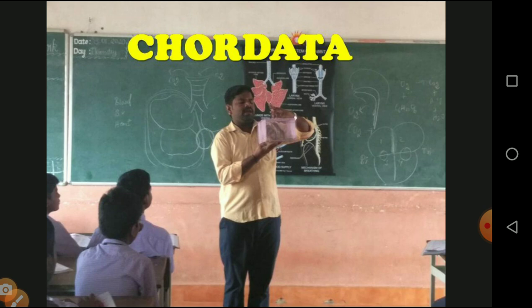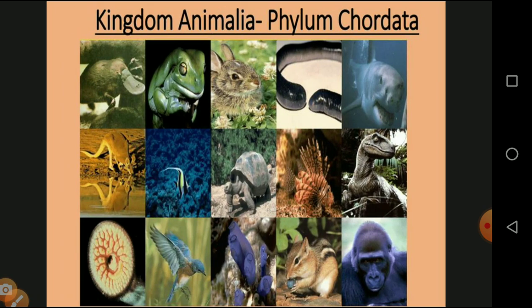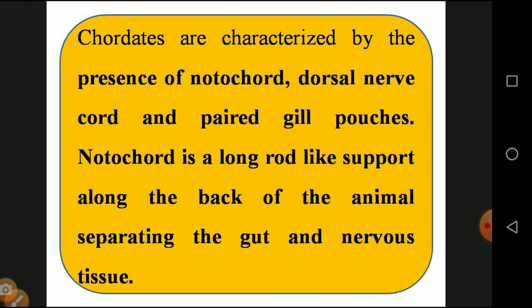In phylum Animalia, phylum Chordata includes various types of organisms starting from fishes, amphibians, frogs, birds, and human beings. Chordates are characterized by the presence of a notochord, which is available on the dorsal nerve cord, and a pair of gill pouches on both sides. The notochord is a rod-like support along the back of the animal, separating the gut and nervous system.